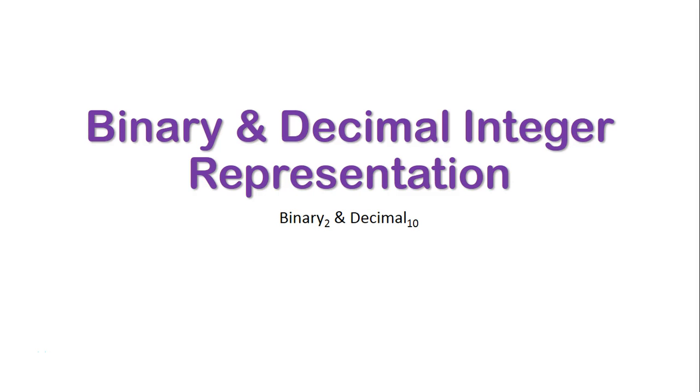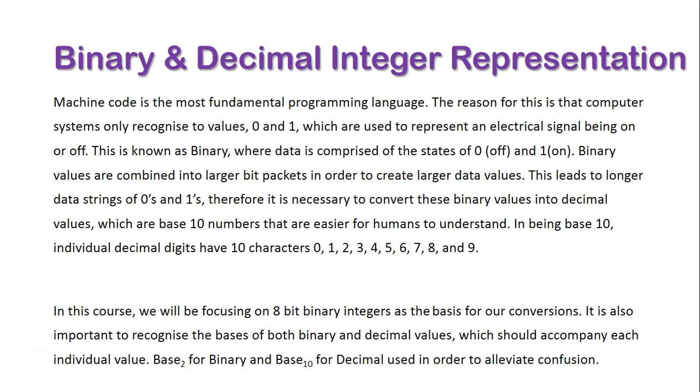We're now going to take a look at binary and decimal integer representation within a system. We need to understand that machine code is the most fundamental programming language. The reason for this is that computer systems only can recognize values 0 and 1, which are used to represent electrical signal being either on or off.